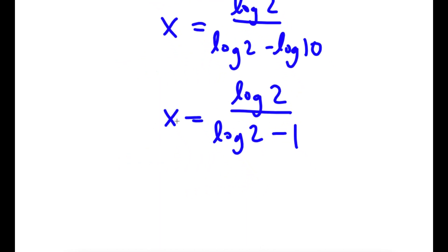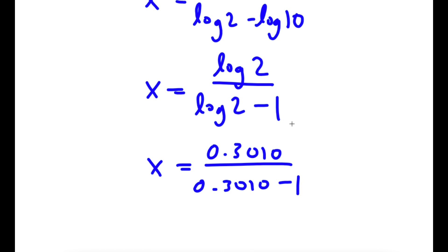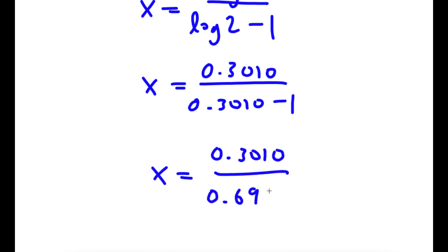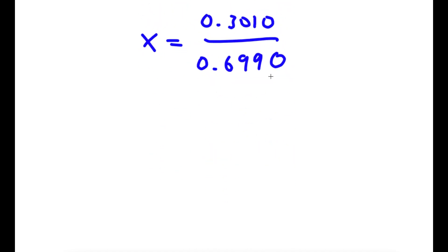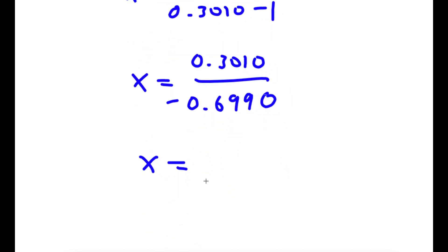Now, log 2 is equal to 0.3010. So I have 0.3010 over 0.3010 minus 1, which is equal to 0.3010 over negative 0.6990. Dividing these two, x is equal to negative 0.43.